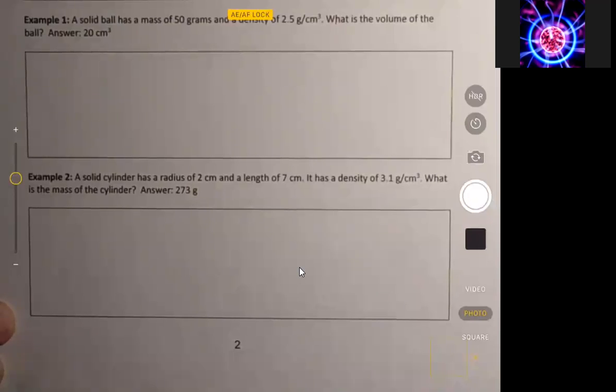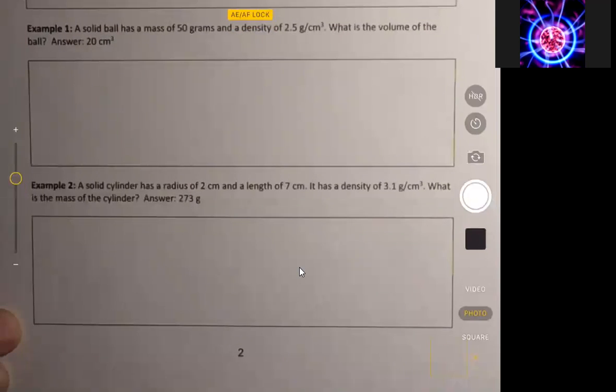All right, so let's look at these examples. We have example one: a solid ball has a mass of 50 grams and a density of 2.5 grams per cubic centimeter. What is the volume?